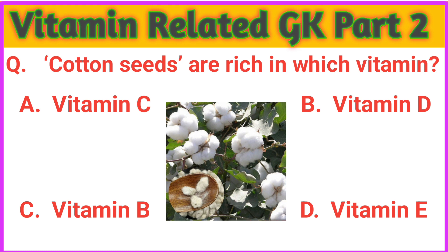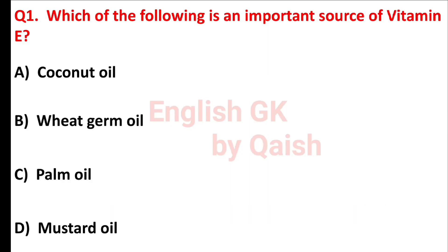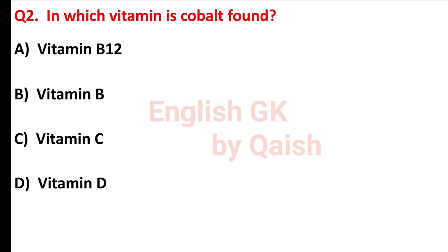Your first question is: which of the following is an important source of vitamin E? Answer is option B, wheat germ oil. In which vitamin is cobalt found? Answer is option A, vitamin B12.